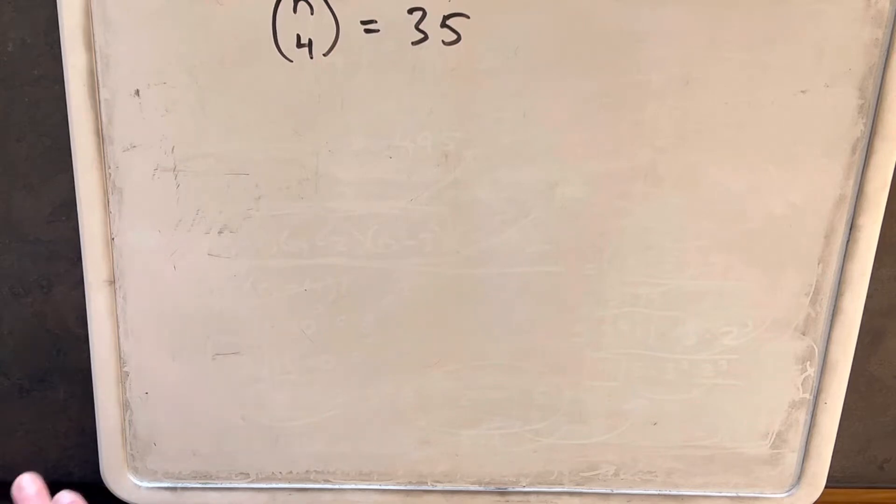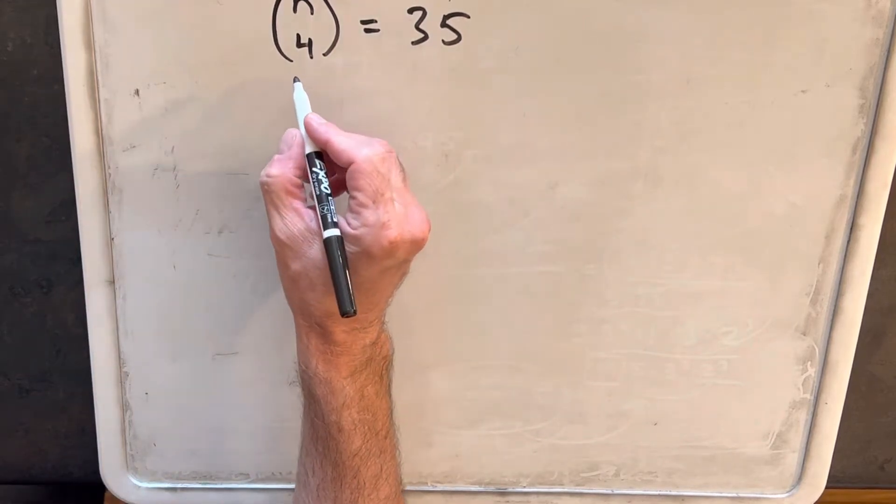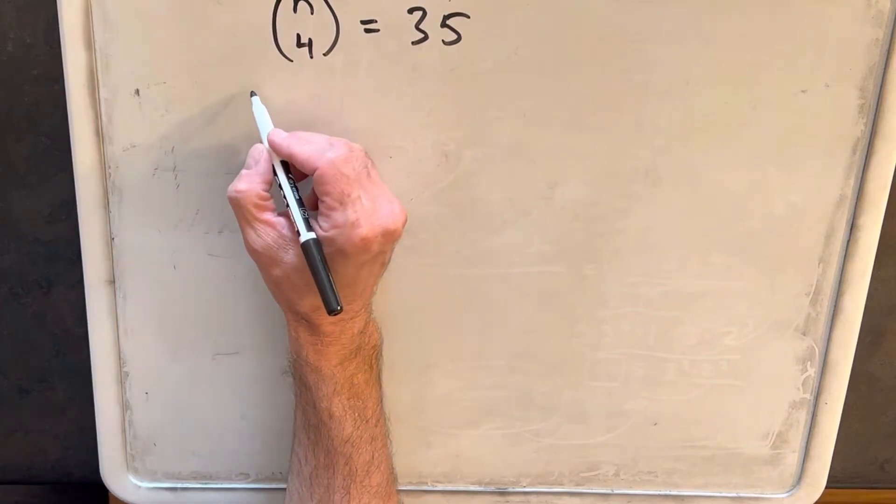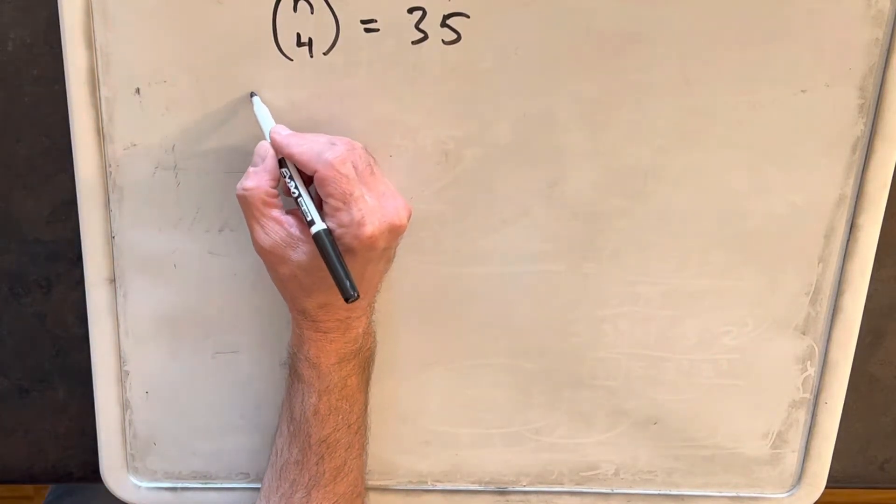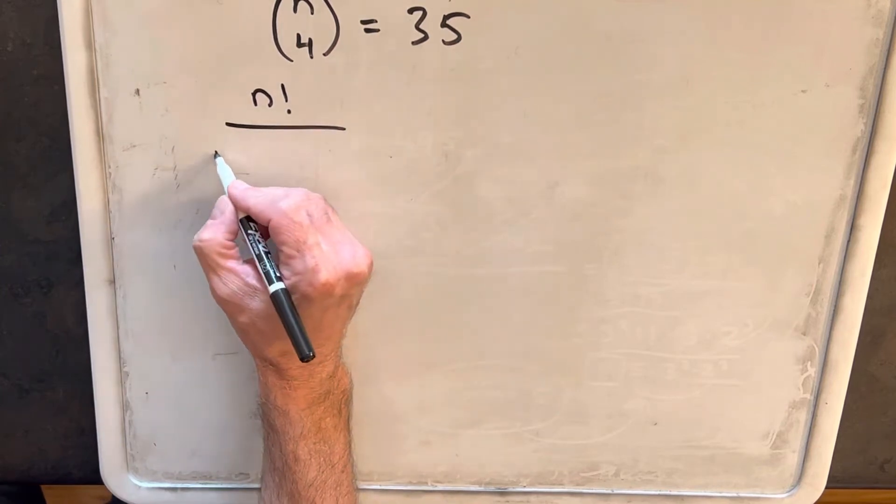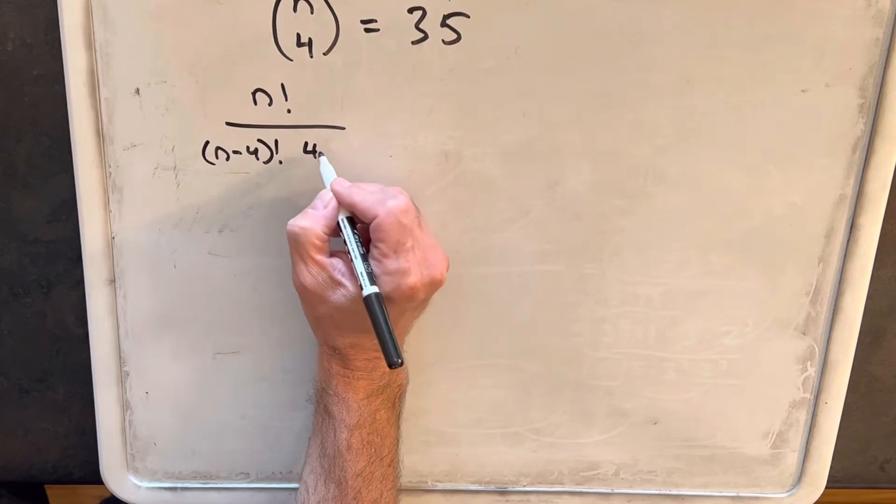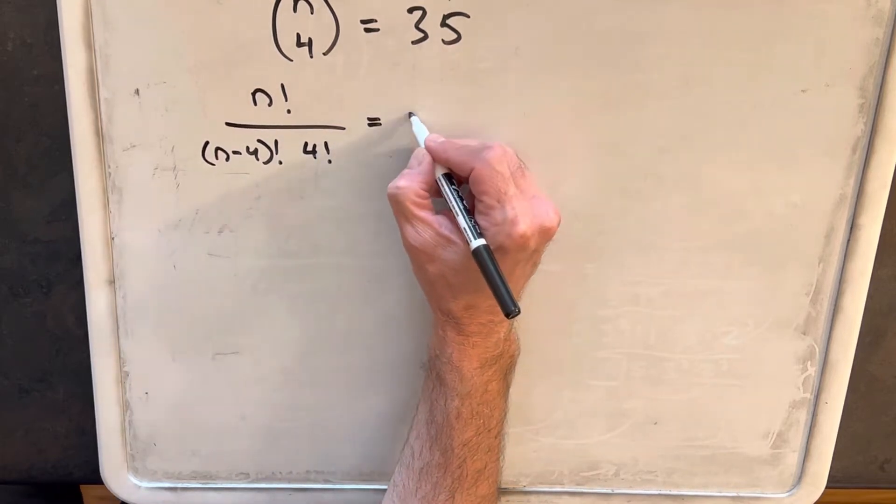So even though it's going to be pretty quick, we'll write our n choose 4 as a factorial expression. So we're going to have, this is the same thing as n factorial over n minus 4 factorial times 4 factorial equals 35.